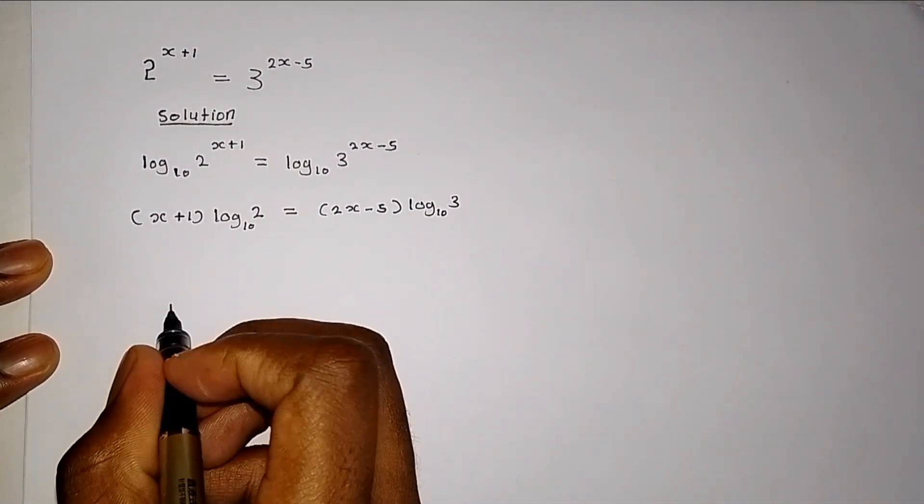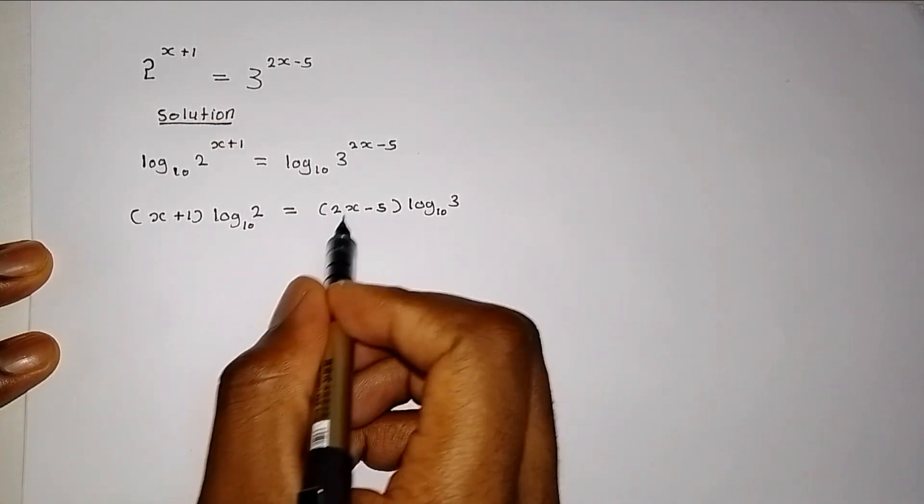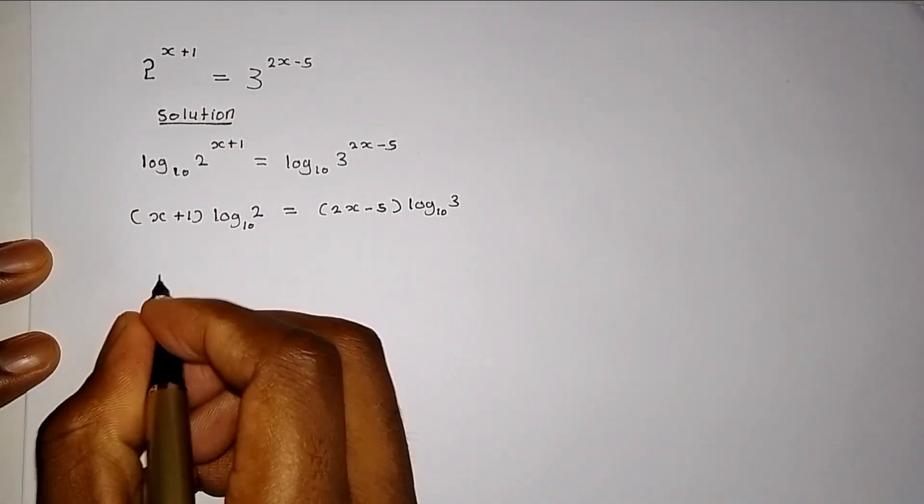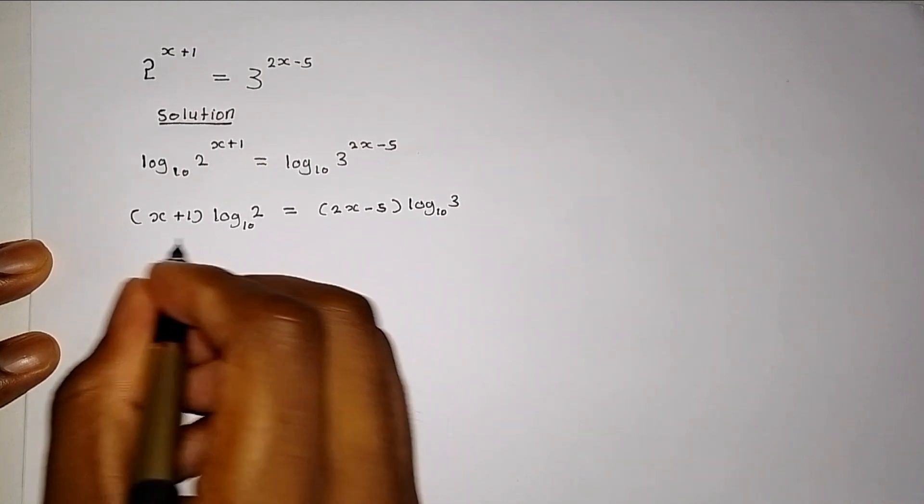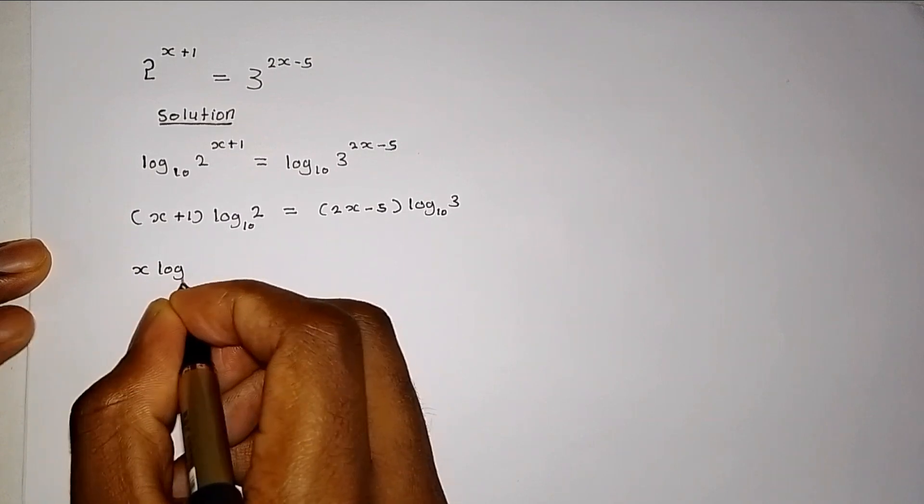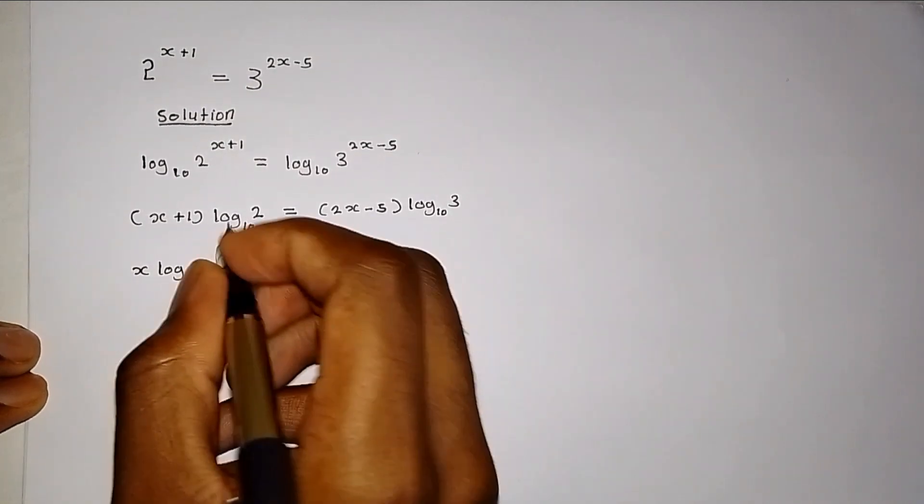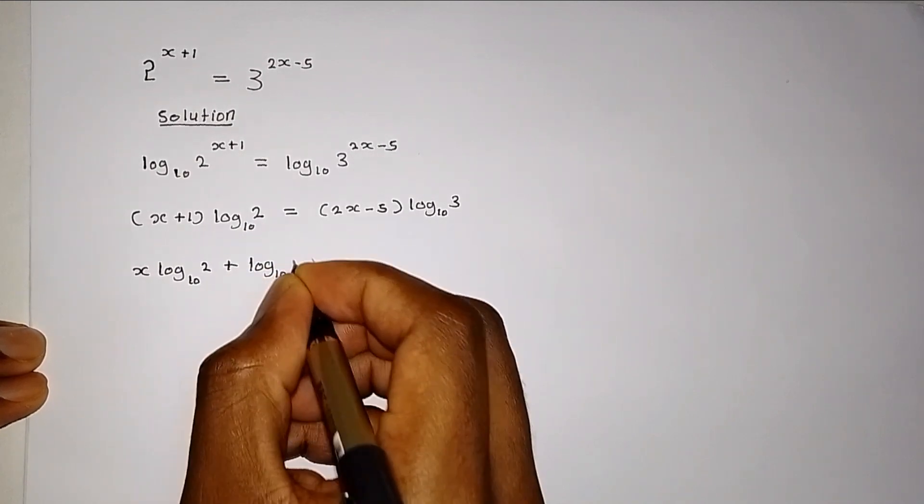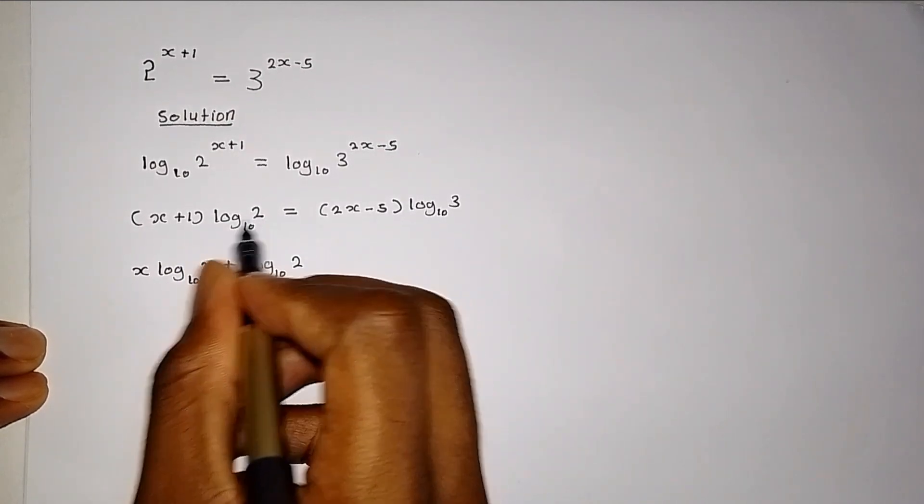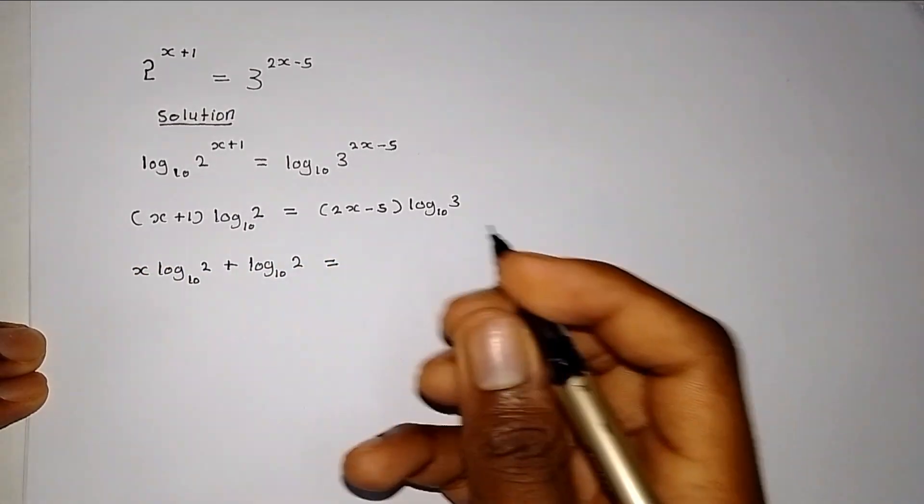Now, the next thing, we multiply the logarithm with the values in brackets. This will be log to base 10 of 2, which gives us x log base 10 of 2 plus log base 10 of 2. Because log base 10 of 2 multiplied by 1, we get that one.